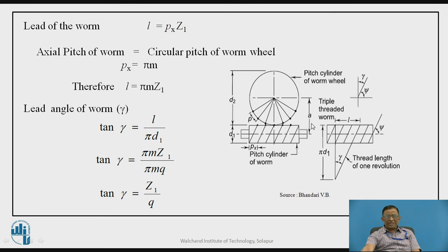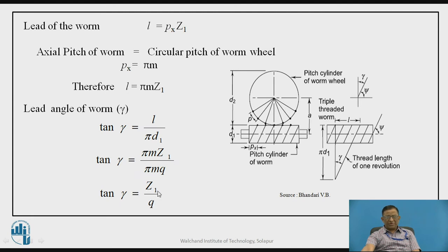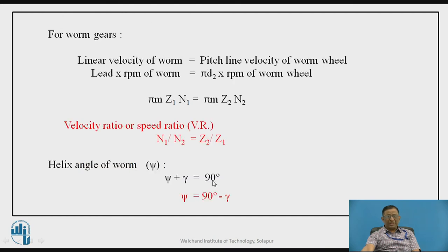The lead of the worm L equals axial pitch multiplied by the number of starts, that is Px times Z1. Since Px equals pi M, the lead is pi M Z1. To calculate tan of gamma (the lead angle), it is L divided by pi D1, where L is substituted as pi M Z1. Since D1 equals Q times M (from the definition of diametral quotient), substituting gives tan gamma equals Z1 divided by Q. Knowing Z1, Z2, Q, and M as the specification, we can find the lead angle gamma.